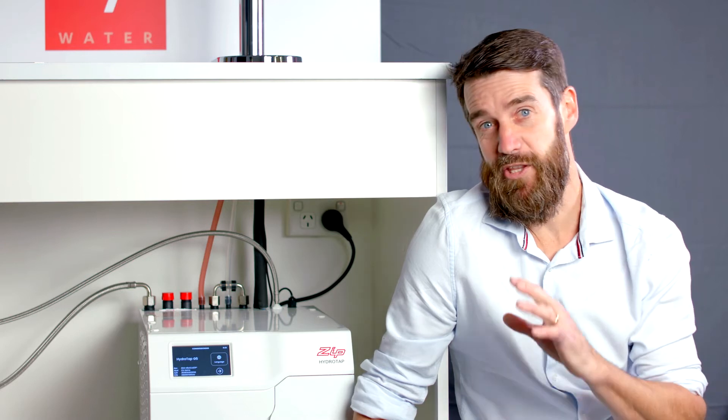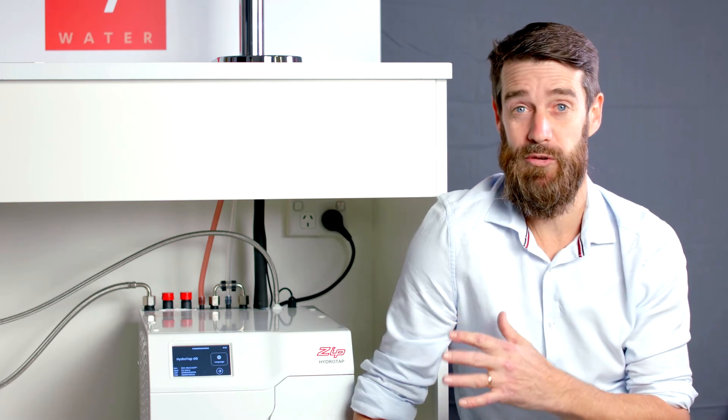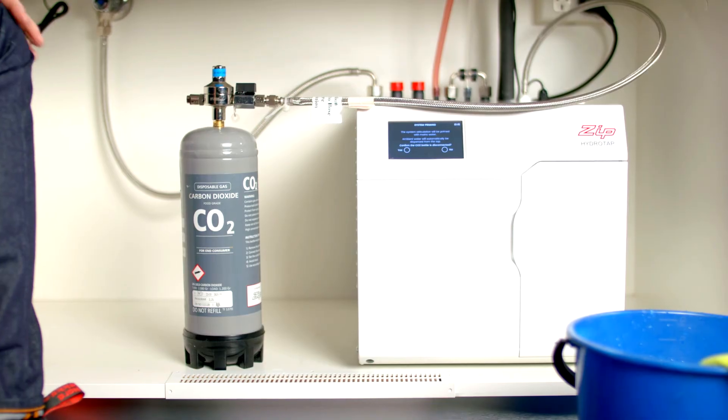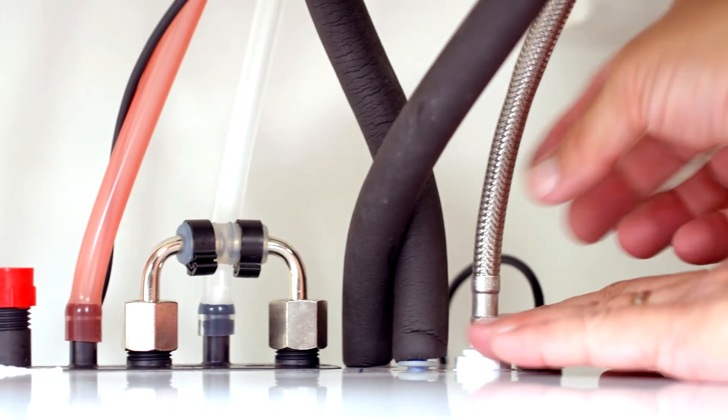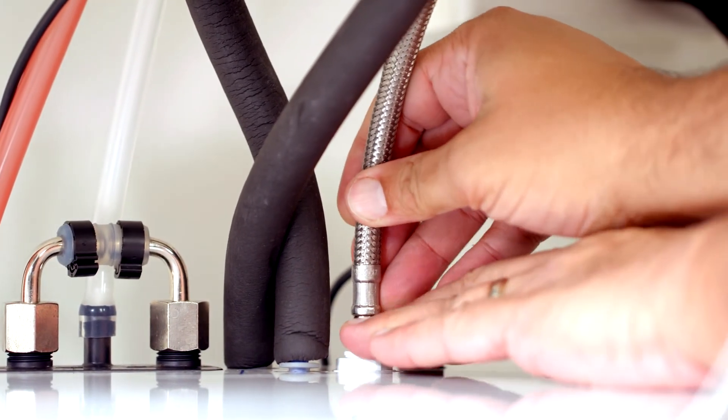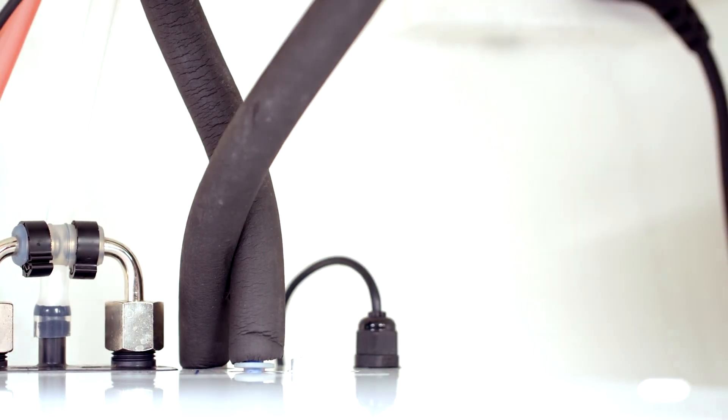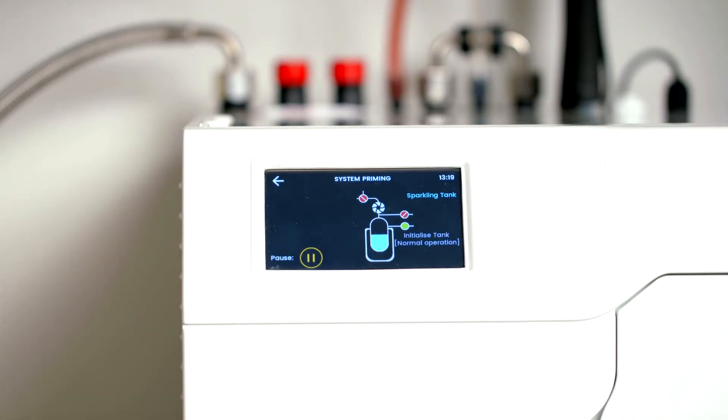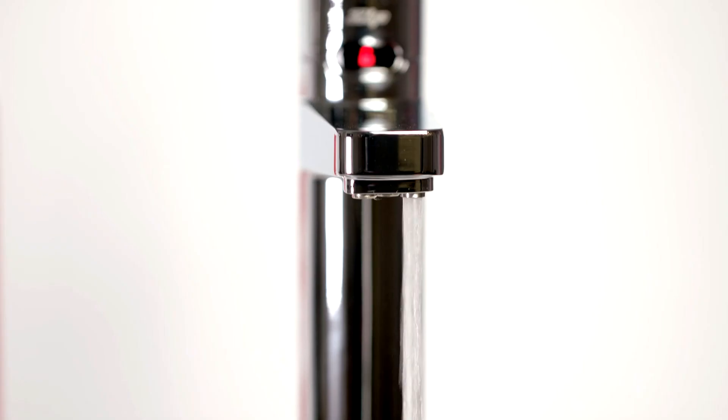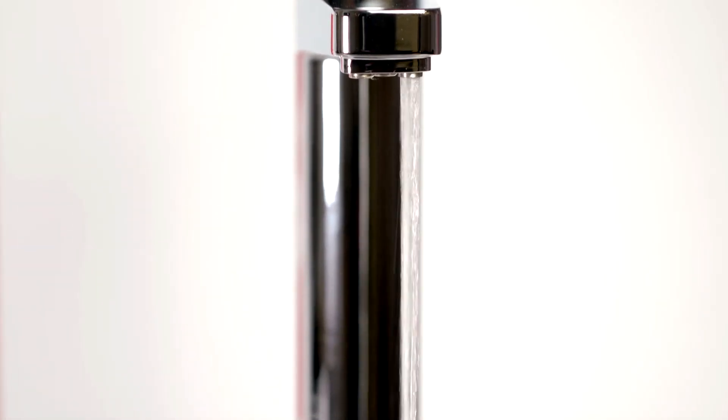Next we need to prime the HydraTap system. This means that all the water paths inside the HydraTap will have water passed through them for the first time. Please make sure the CO2 bottle regulator is turned off or disconnected from the HydraTap before you start this process. Press yes once you've confirmed this. Press the play button to start the system priming. Water may dispense from the tap or faucet during this process.